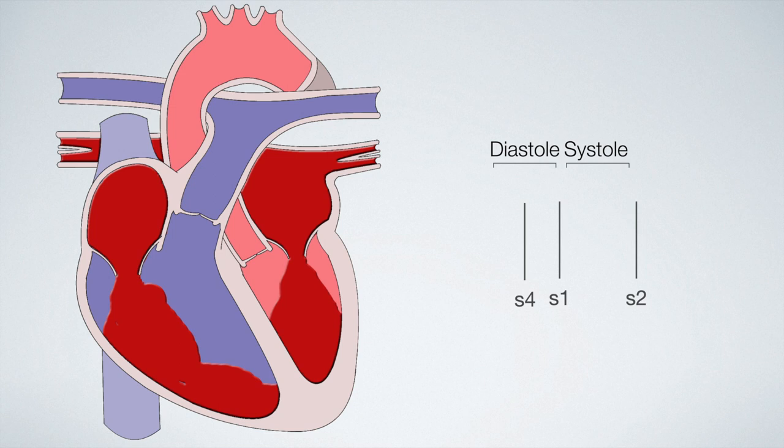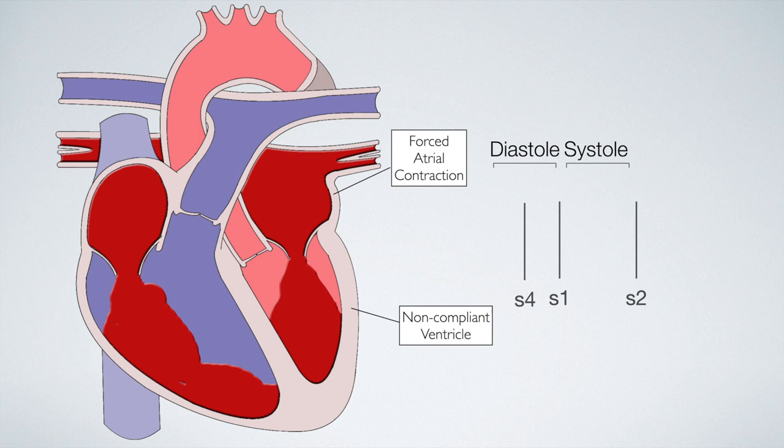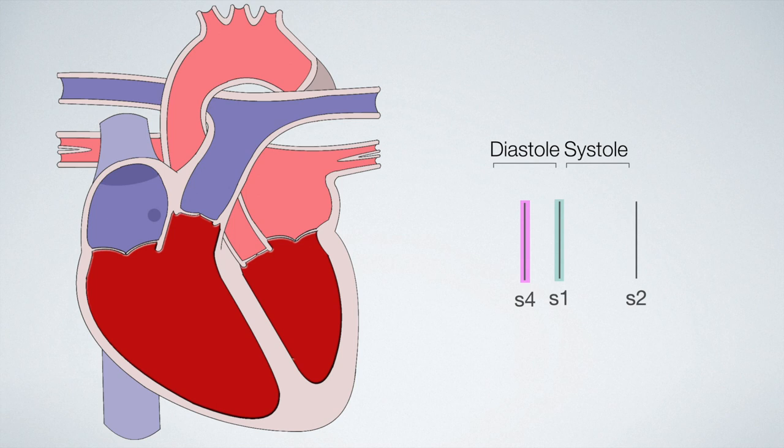This produces audible vibrations which are heard as the S4 heart sound. The S1 heart sound is produced by closure of the tricuspid and mitral valves and the S2 heart sound is produced by the closure of the pulmonary and aortic valves.